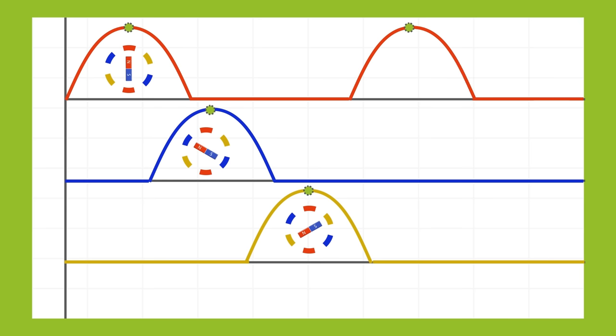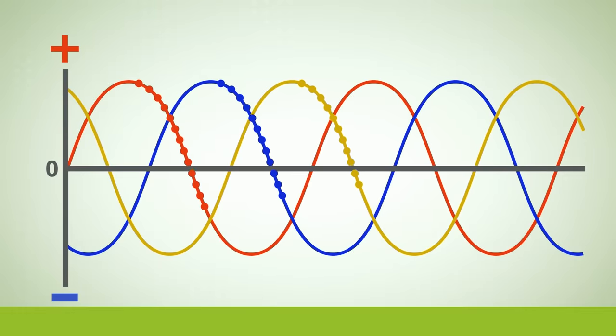So if you look at these three lines, you can see that when one line is at its peak, the other two lines are still generating current but they are not at full strength, meaning they are not at peak.